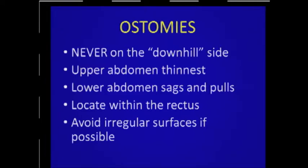When an obese patient stands up, the abdomen can hang down 9 to 10 to 12 to 15 inches in the lower abdomen, and your ostomy will get a huge amount of tension put on it. If you didn't sew it in, it'll retract back into the abdomen. If it doesn't retract, it'll have a lot of ischemia and might infarct. Lower abdominal ostomies in big patients just don't work and are not a good idea.